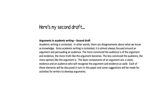Here's my second draft: 'Academic writing is contested — in other words, there are disagreements about what we know as knowledge. Since academic writing is contested, it is almost always focused around an argument and persuading an audience. The more convinced the audience is of the argument and evidence, the more truth-like the argument becomes; the less convinced the audience, the more opinion-like the argument is. The basic components of an argument are a claim, evidence, and an audience who will recognize the arguments and evidence as valid. Each of these elements will be discussed in turn in this paper, and some suggestions will be made for activities for writers to develop arguments.' So the point is not to stick totally to your original outline but to incorporate your new thoughts and new connections into your new draft and outline.